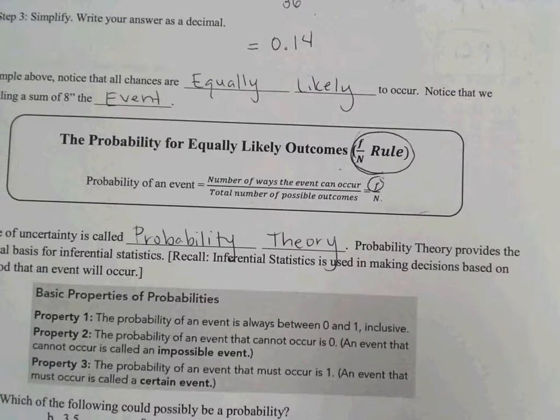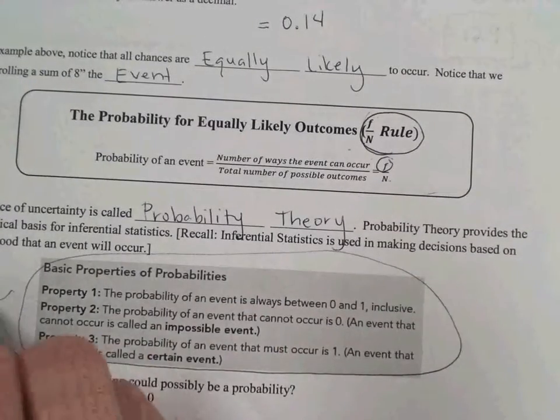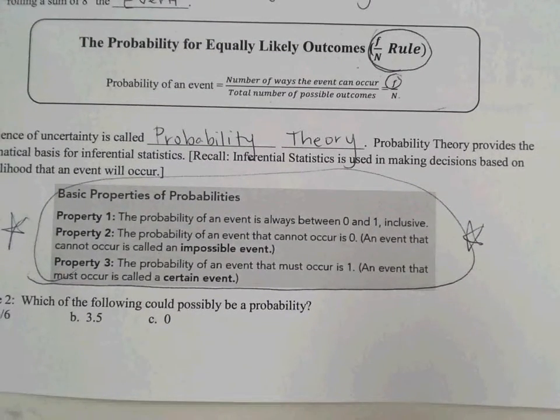Here's a few basic properties of probabilities. These are key. Property 1 says the probability of an event is always between 0 and 1 inclusive. 0 would be 0%, 1 would be 100%. So a probability of something happening is never going to be over 100%. Property 2: The probability of an event that cannot occur is 0. Never going to happen. 0% chance. An event that cannot occur is called an impossible event.